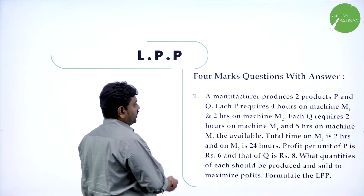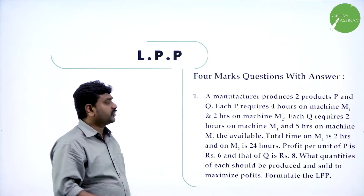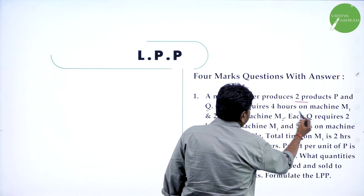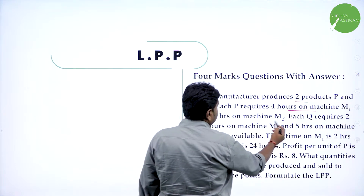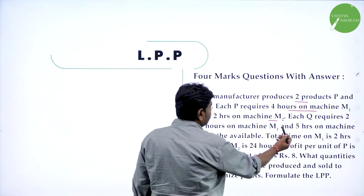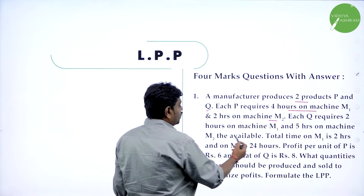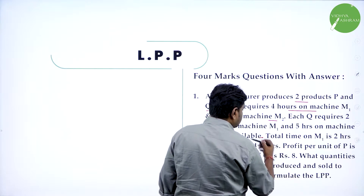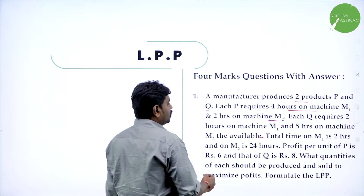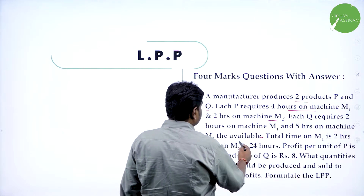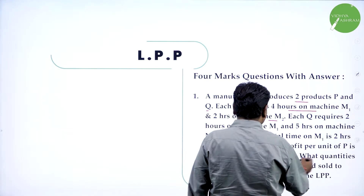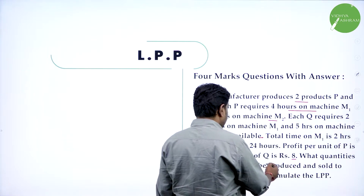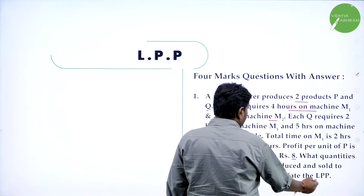They will ask four markers to formulate — it's a problem to formulate LPP. A manufacturer produces two products P and Q. P requires four hours on machine M1 and two hours on machine M2. Q requires two hours on machine M1 and five hours on machine M2. Total available time on machine M1 is 20 hours and M2 is 24 hours. Profit per unit of P is rupees 6 and Q is rupees 8. What quantities of each should be produced to maximize the profit? Formulate the LPP.